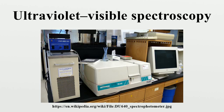The instrument used in ultraviolet-visible spectroscopy is called a UV-Vis spectrophotometer. It measures the intensity of light passing through a sample; the ratio is called the transmittance and is usually expressed as a percentage. The absorbance is based on the transmittance. The UV-Vis spectrophotometer can also be configured to measure reflectance, in which case it measures the intensity of light reflected from a sample. The basic parts of a spectrophotometer are a light source, a holder for the sample, a diffraction grating in a monochromator or a prism to separate the different wavelengths of light, and a detector.